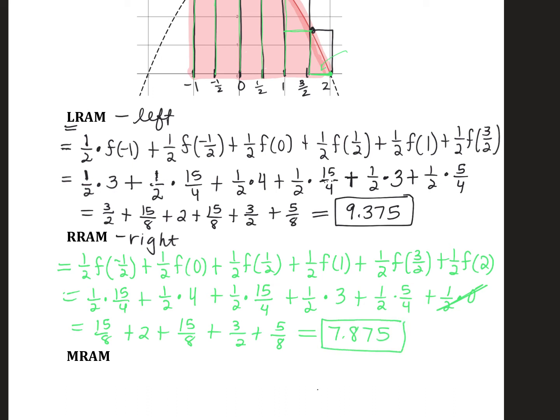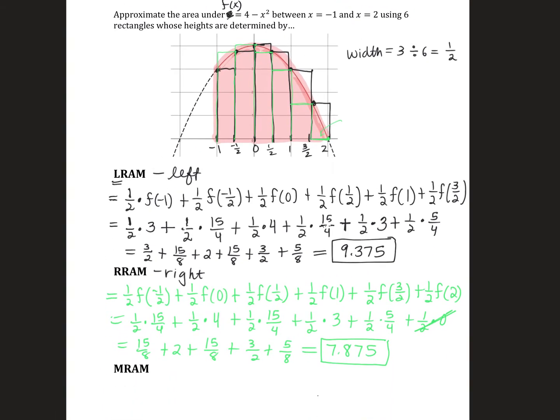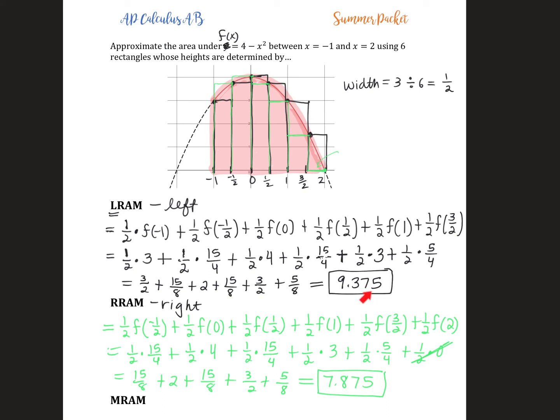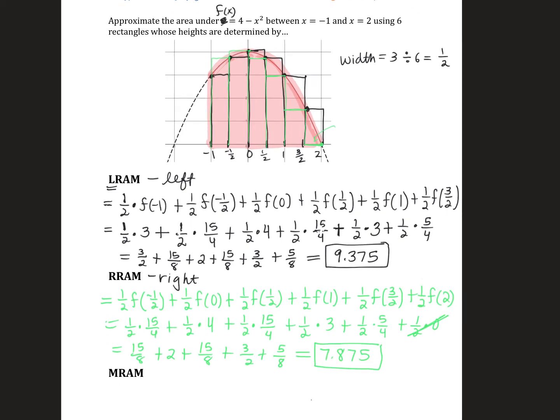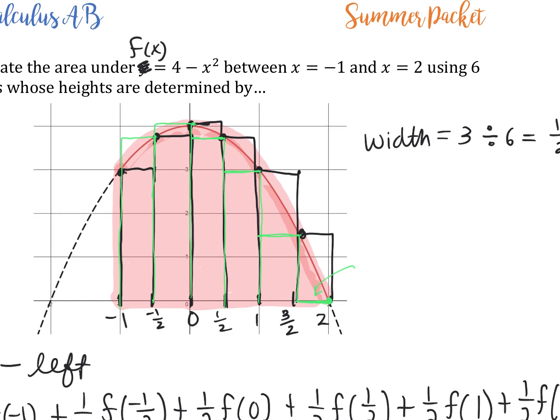We've found two approximations: LRAM got 9.375, RRAM got 7.875. We'll discover that the exact area is somewhere between those. The last method is MRAM—midpoint rectangle approximations—where heights are determined from the midpoints of each interval.